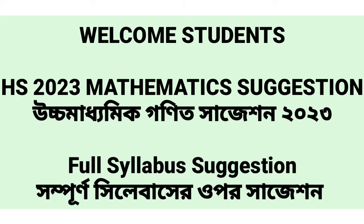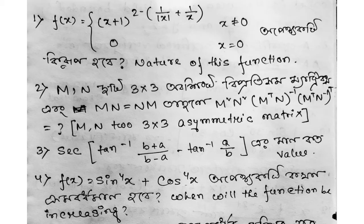If you are interested in the first question, please comment and give me your answer. The first question is: if x is equal to (x+1)² minus 1 divided by mod(x+1), when x is not equal to 0, and x equals 0 when x equals 0 — what will be the value of A, and what will be the nature of this function?